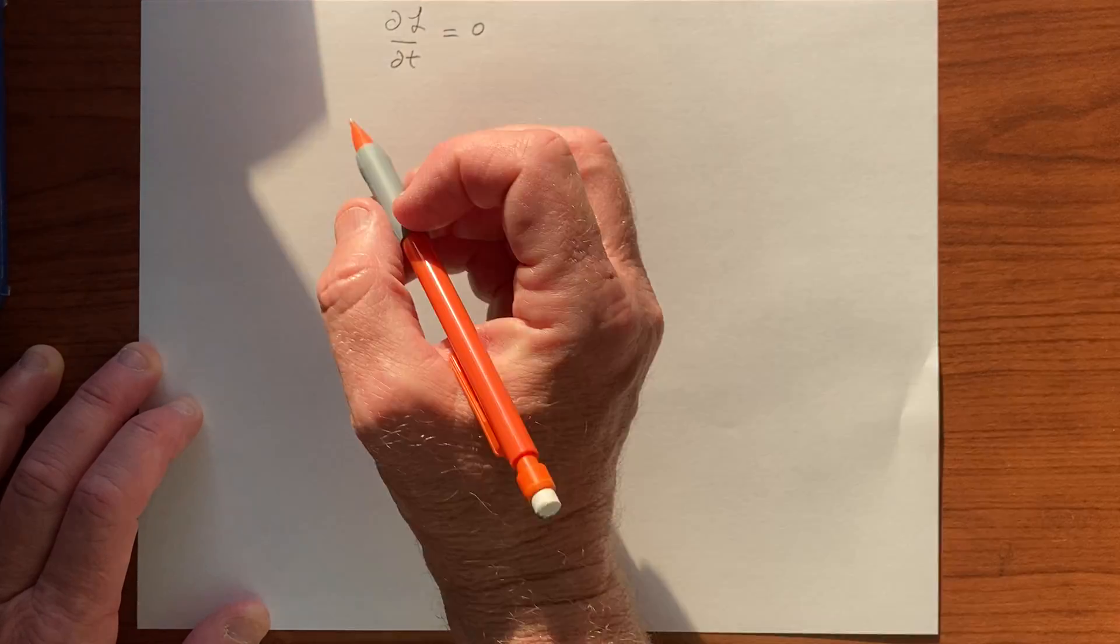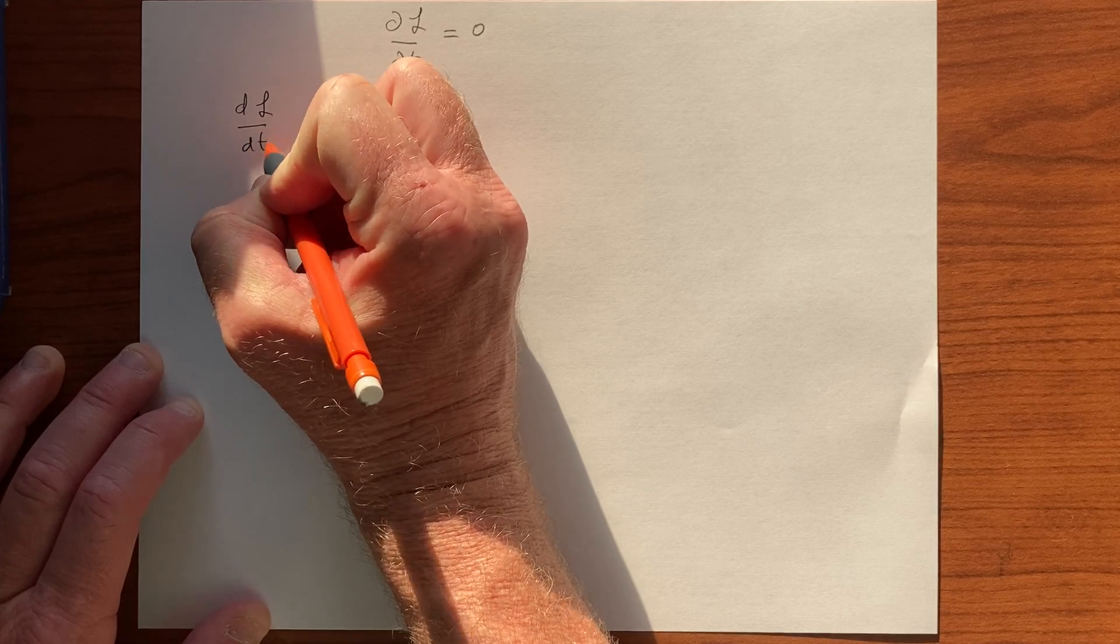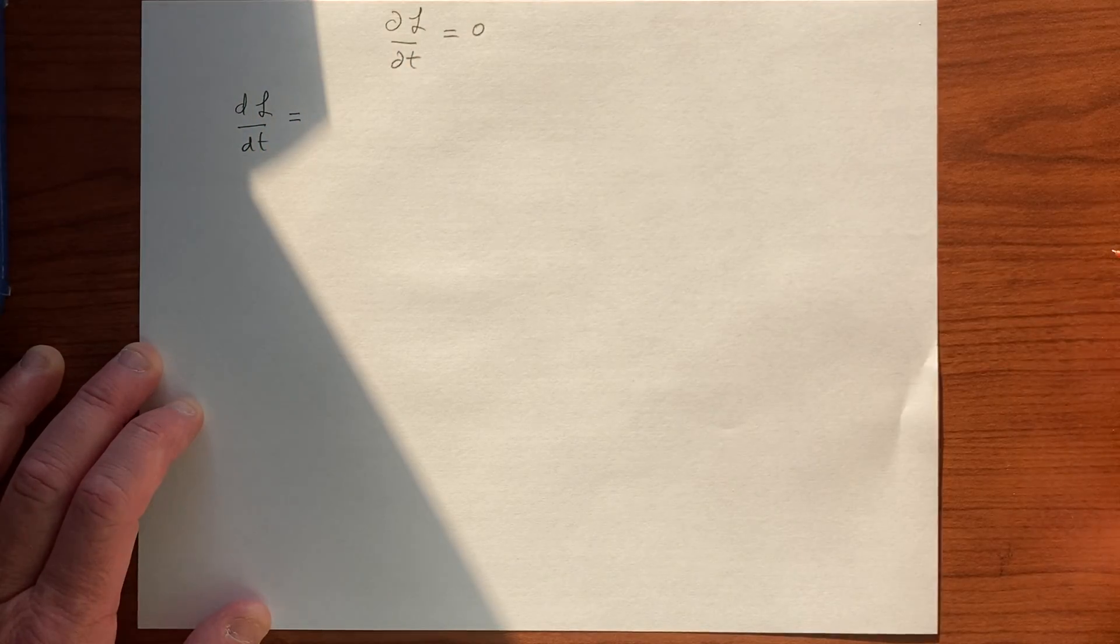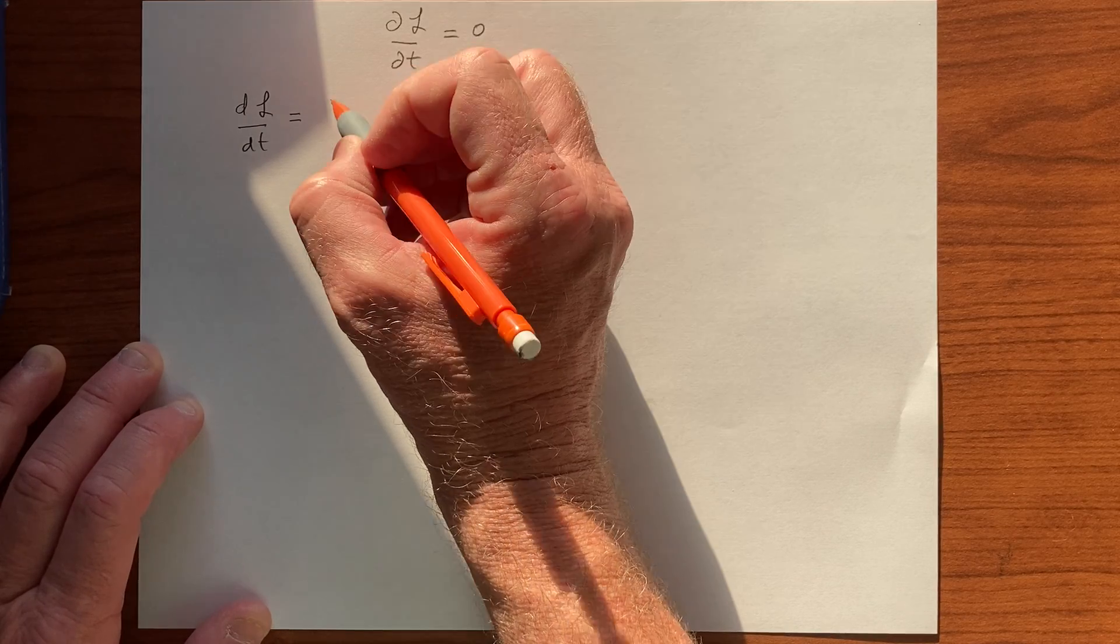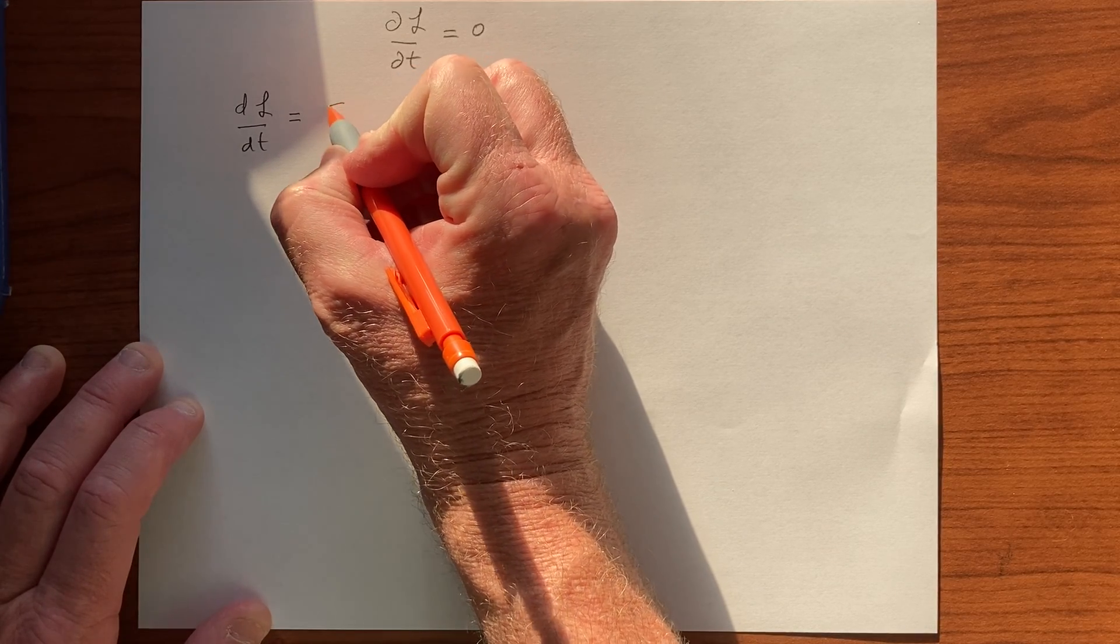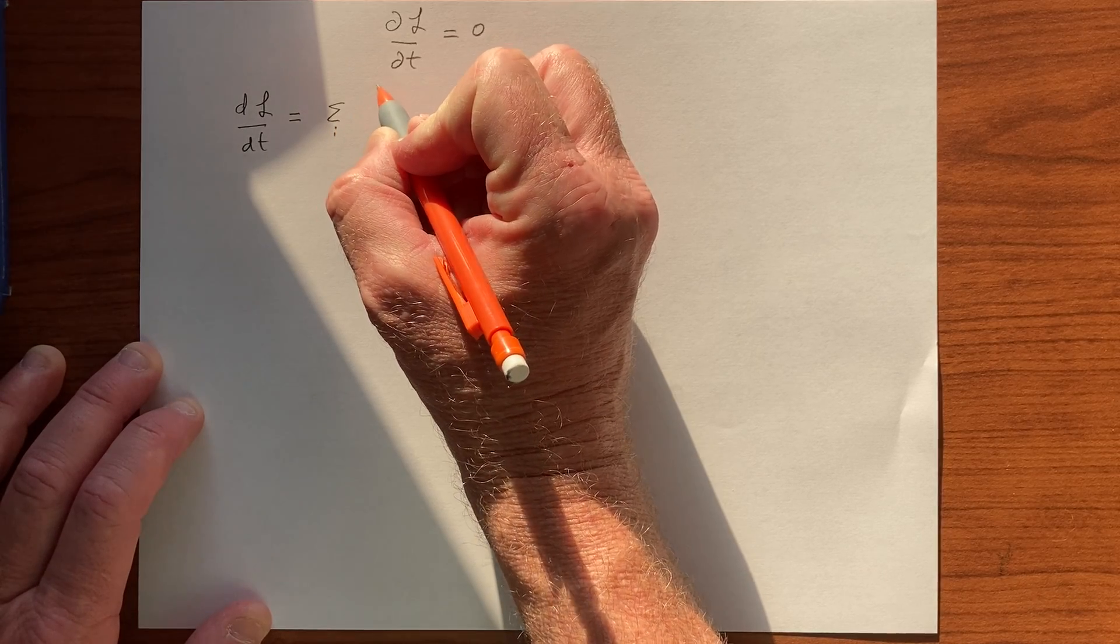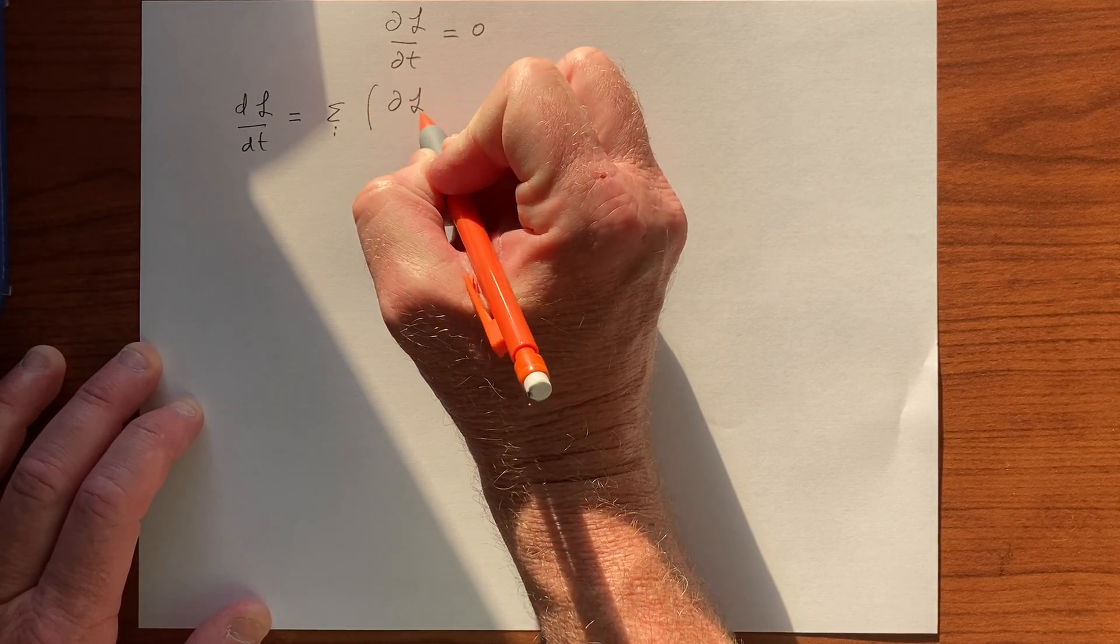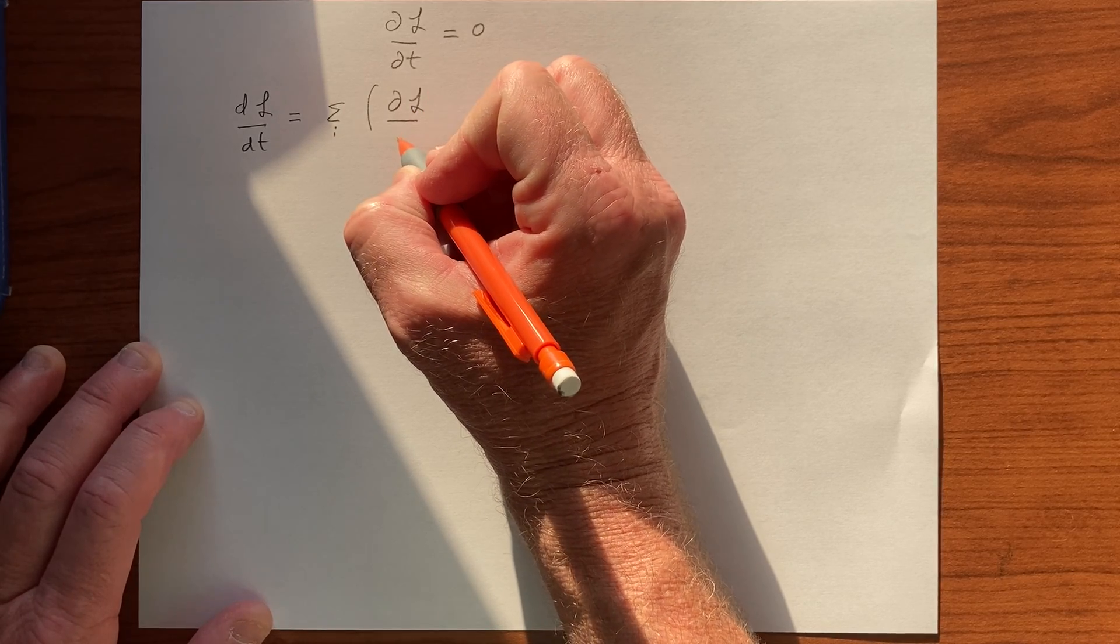So there is this object that's going to be equal to zero. This object is a sum of terms. We have a derivative of L with respect—L is a function of Q and Q dot.